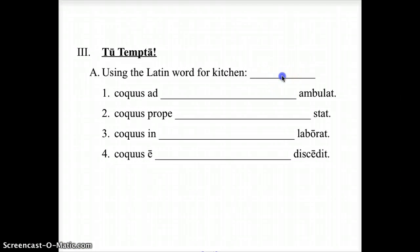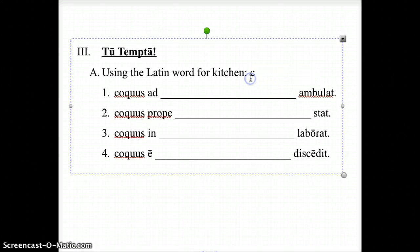Okay, now you try. So using the Latin word for kitchen, which as we all know is culina, complete these following sentences and make sure you put culina into the correct case depending on the preposition. Stop here if you need to.